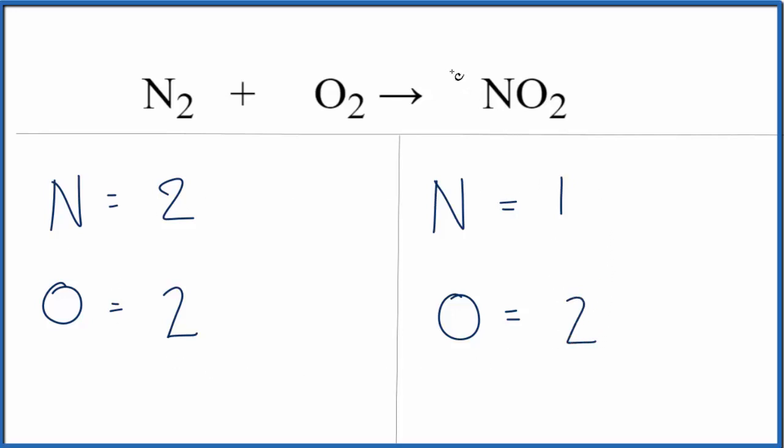We could put a 2 as our coefficient in front of the NO2, and that means 1 times 2, that would give us two nitrogens, and those would be balanced.